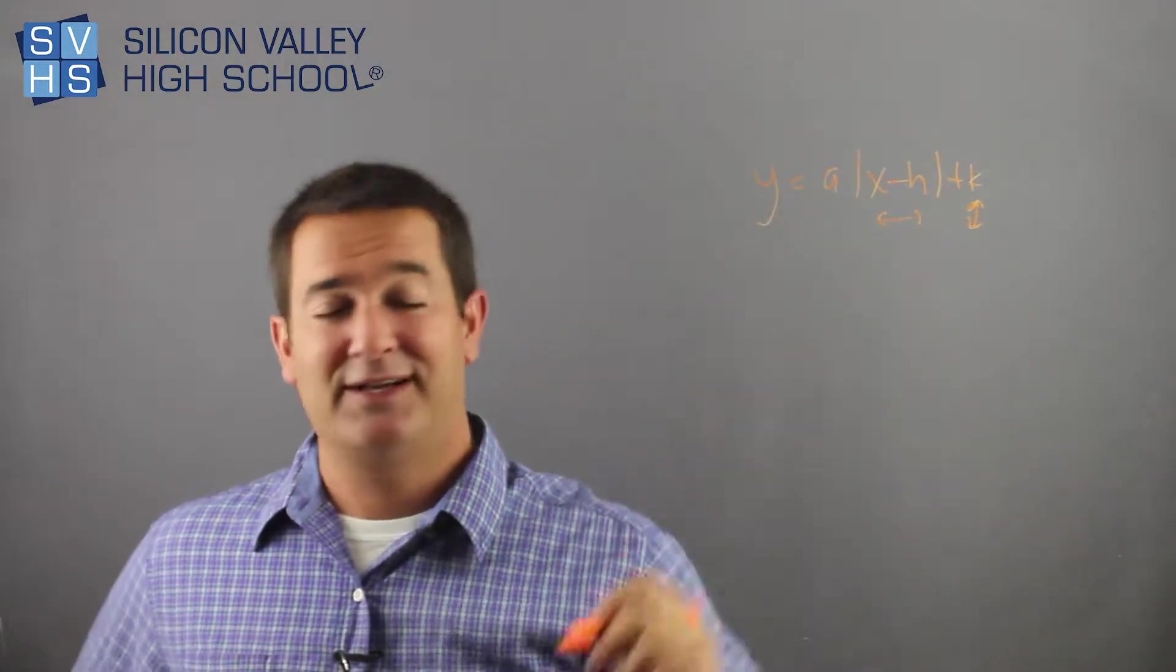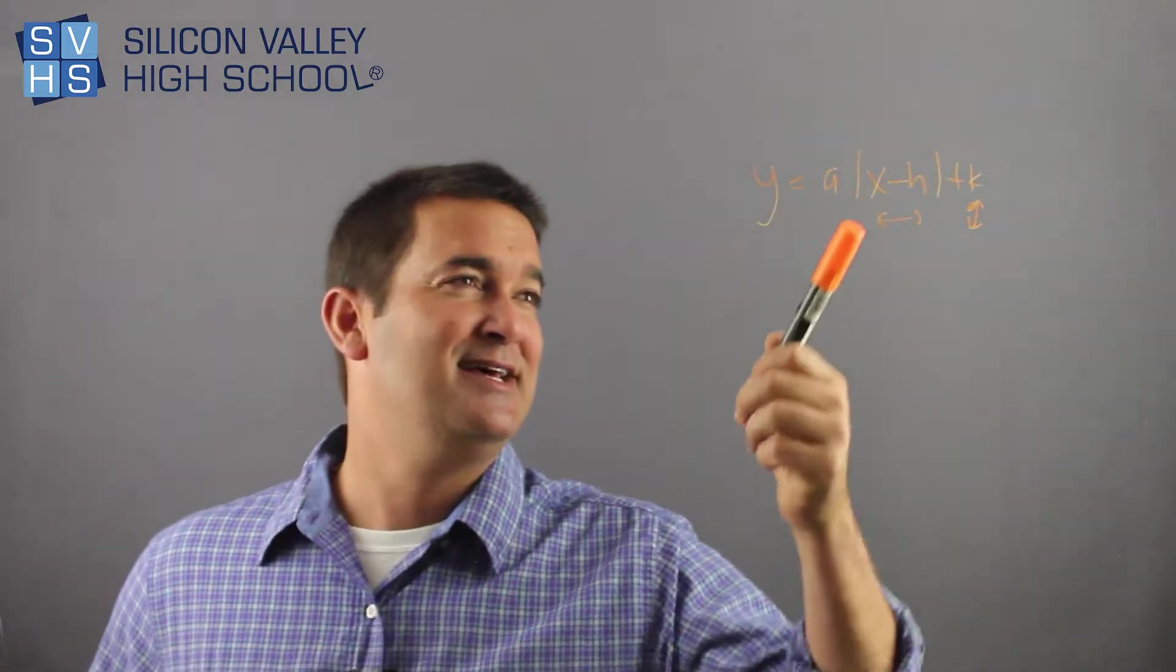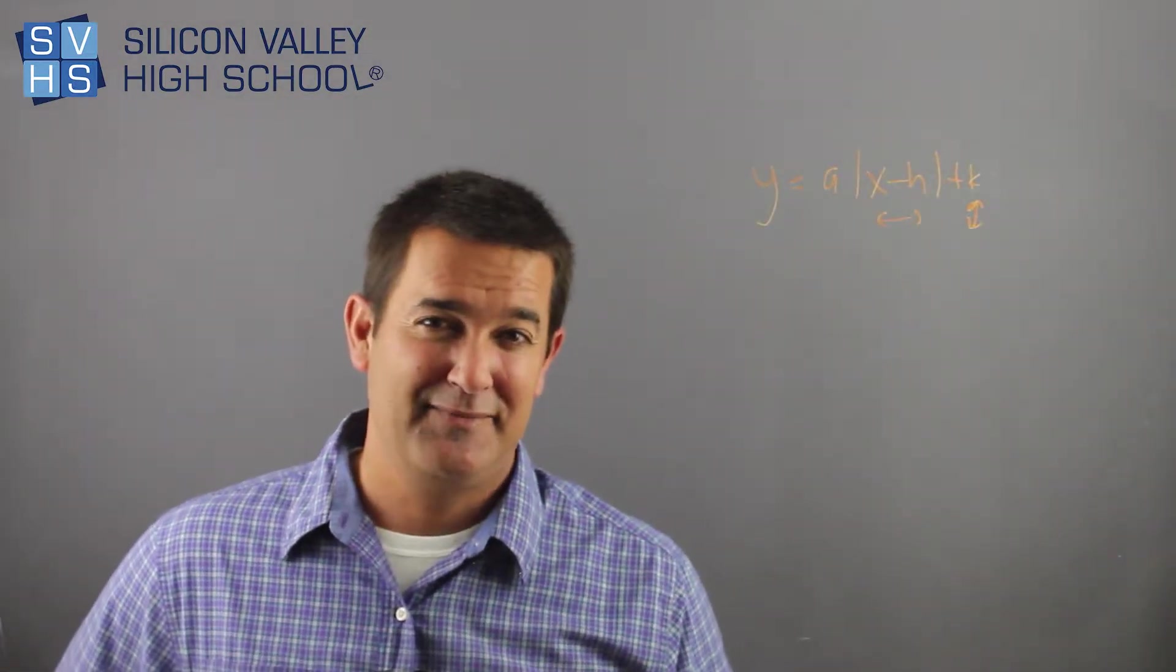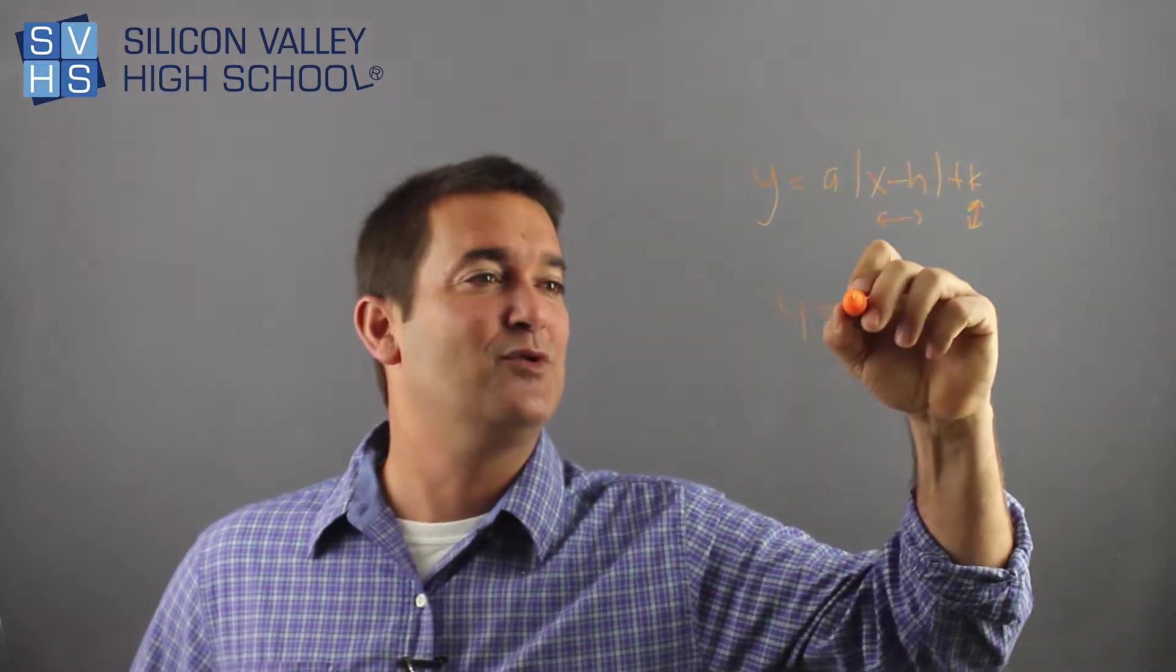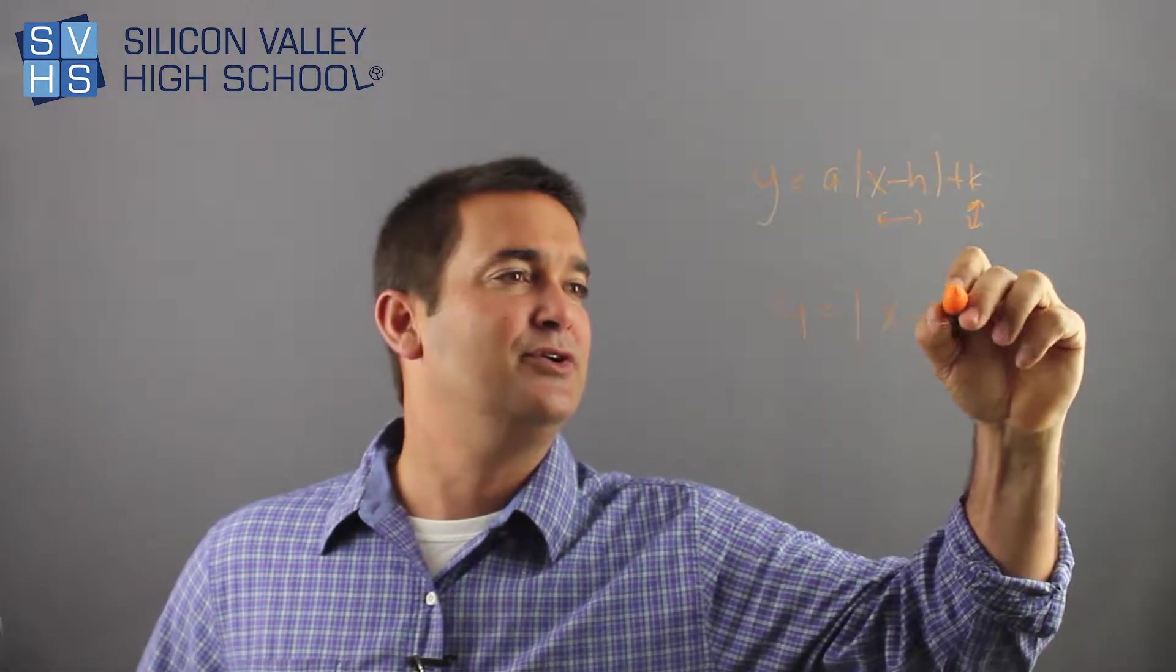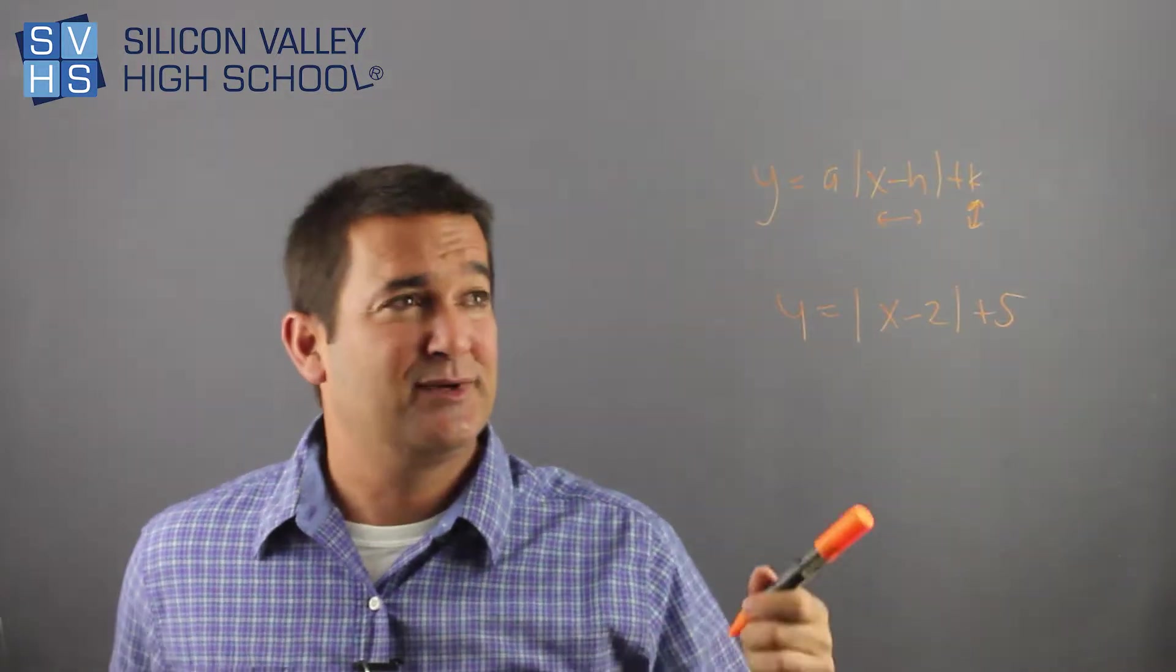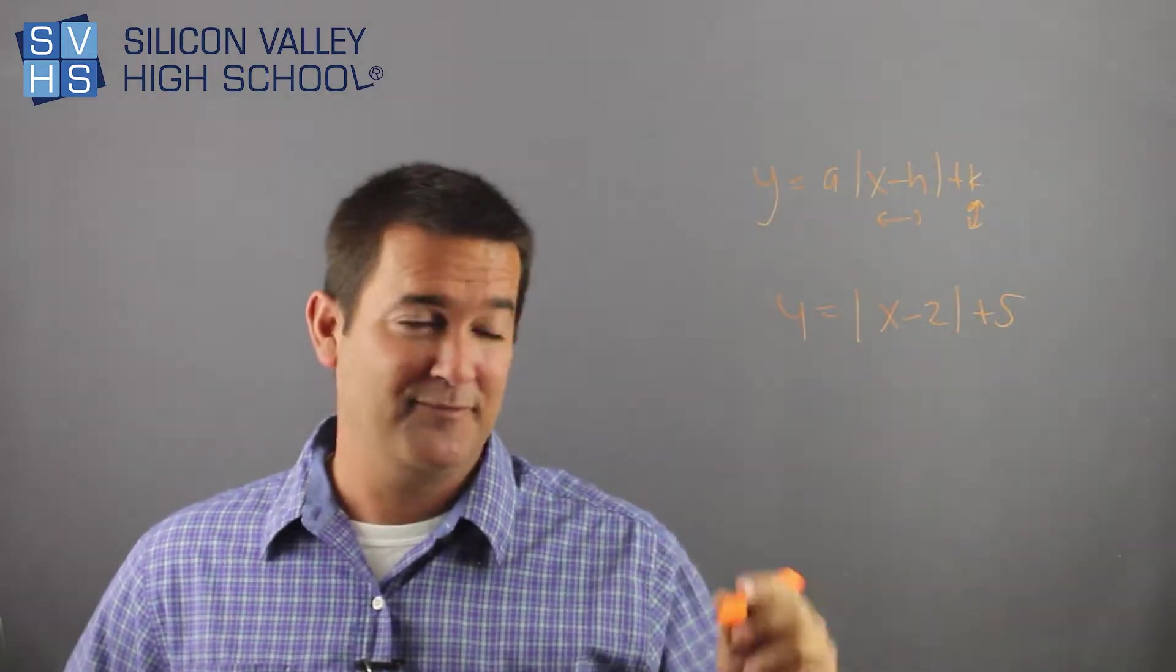This is side to side transformations. And this is annoying because it's already a minus, right? And so when you start messing with H, if you said like, for instance, Y equals X minus 2 plus 5. Well, that's really easy. And by the way, A in this case would just be 1. So let's ignore A.